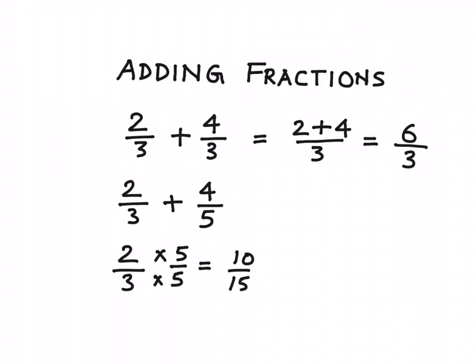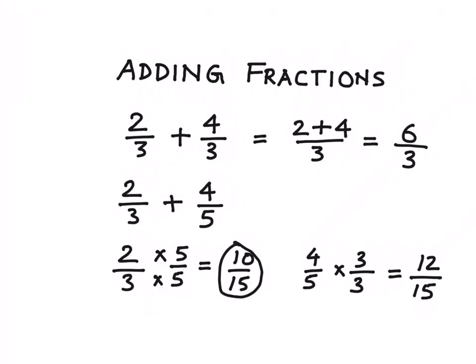Now for 4 by 5, we convert it into its equivalent fraction. We multiply both numerator and denominator with the number 3, so the answer would be 12 by 15. Now if you look at these two equivalent fractions, 10 by 15 and 12 by 15, they both have got the same denominator. So we have converted these unlike fractions into like fractions.